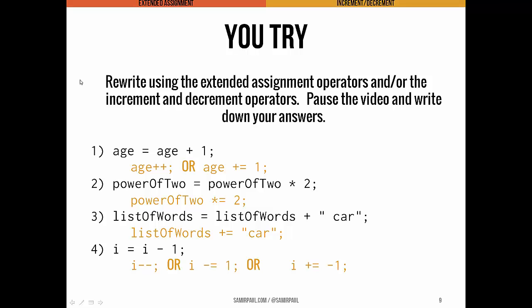Let's take a look at the answers. Age equals age plus one. You could think of that as age plus plus. You could think of it as age plus equals one. And not written here, you could also think of it as plus plus age. You could use the pre-increment operator if you wanted to. Second one, power of two equals power of two times two. Well, you can use the times equal assignment operator.